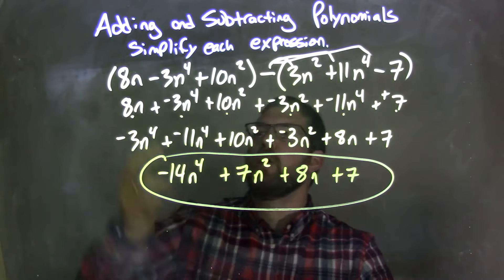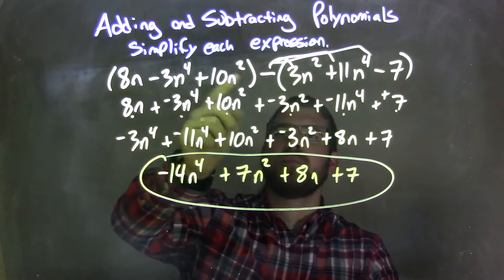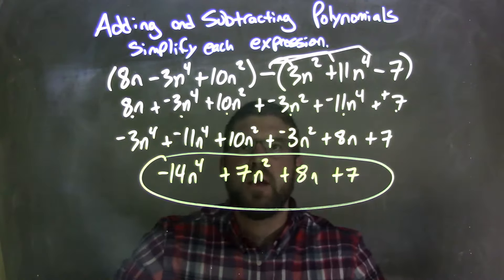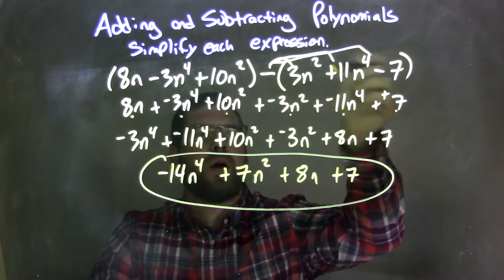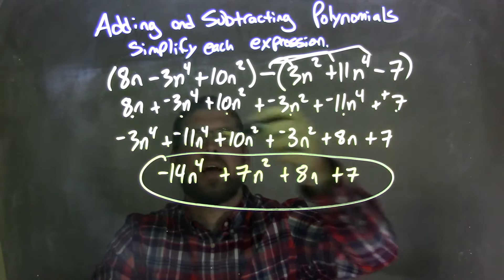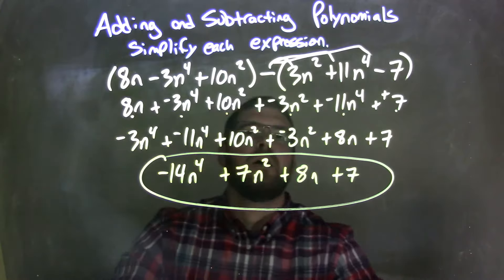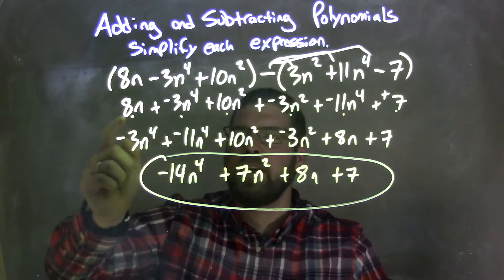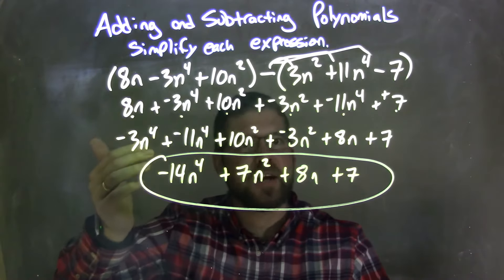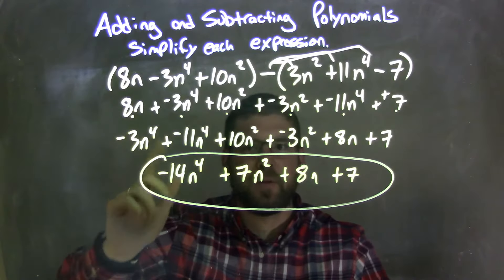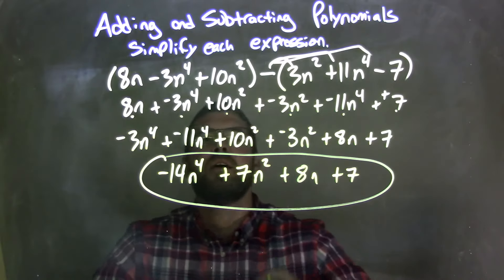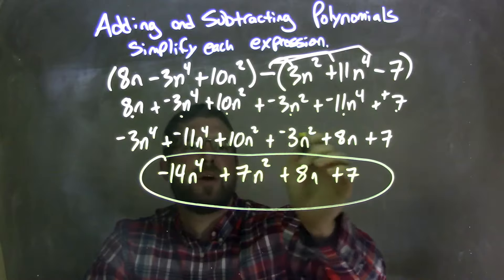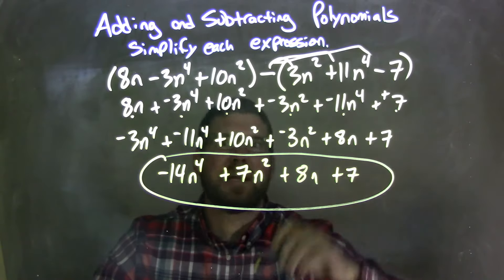So let's recap. We're given 8n minus 3n to the 4th plus 10n squared minus, 3n squared plus 11n to the 4th minus 7. I distributed the subtraction sign across, made everything plus a negative, and made that plus a negative as well. I like to see everything as plus a negative. Now I rearrange using the commutative property, highest degrees first. I use a dot system and double-checked my work to make sure I brought everything down, so we have the same number of terms and all the terms come down. So: negative 3n to the 4th plus negative 11n to the 4th plus 10n squared plus a negative 3n squared plus 8n plus 7.